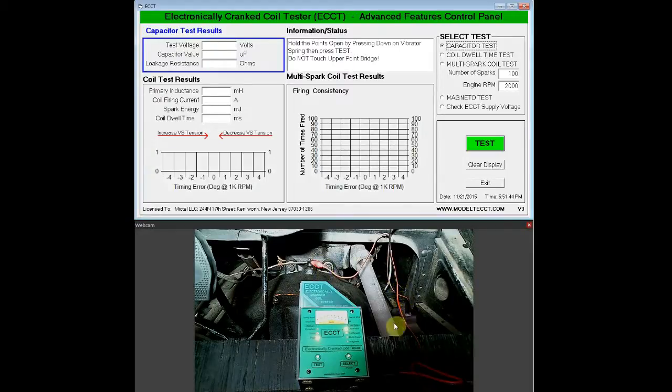The Magneto test can be run on the eCCT standalone by selecting the Magneto test function and pressing the test button, or by using the advanced features control panel. We'll be using the advanced features control panel for this demonstration. To do that, we press on the Magneto test function.